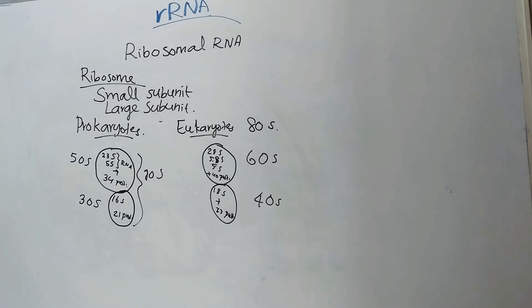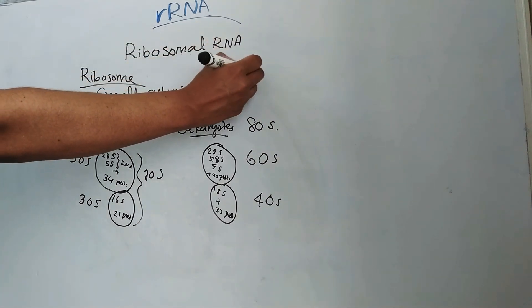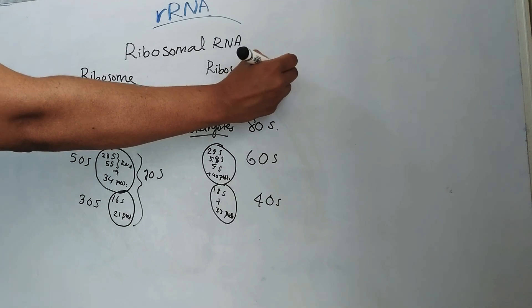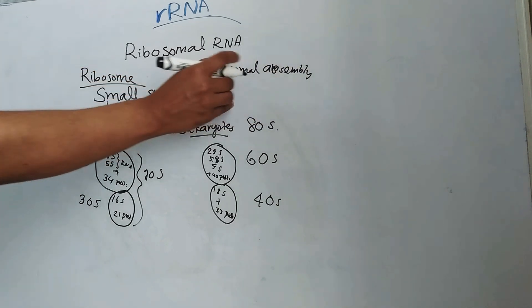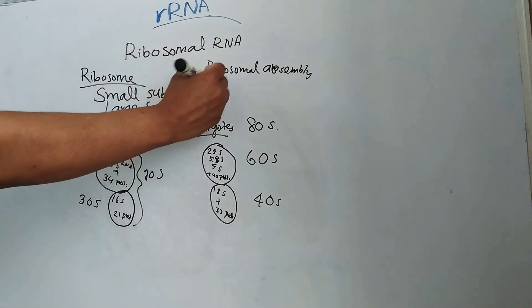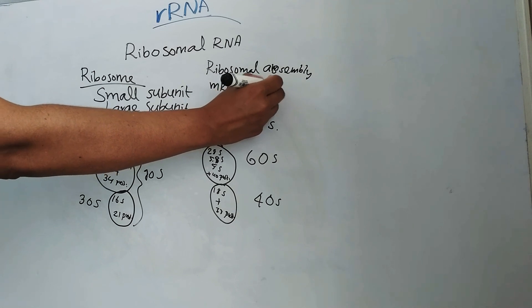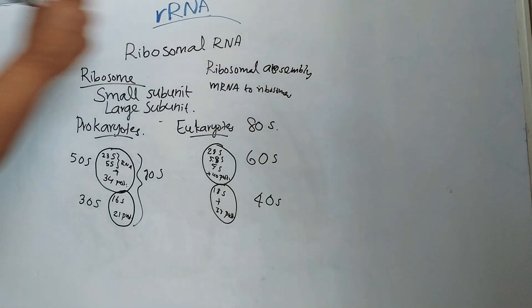Coming to the function of rRNA, they are necessary for ribosomal assembly and they help in binding of mRNA to ribosomes and for its translation.